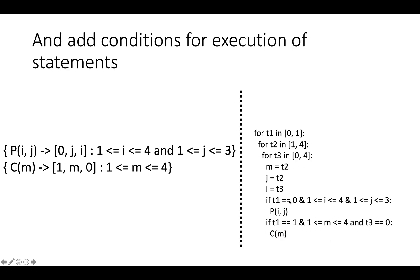Now we flesh out the conditions for execution of the statements. So P(i,j) is only ever executed when t0 is 0. So it must be guarded by a t1 equal to 0. And then it's also only executed when j or t2 is between 1 and 3, and when i or t3 is between 1 and 4.